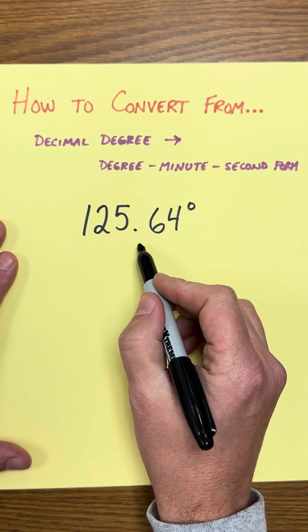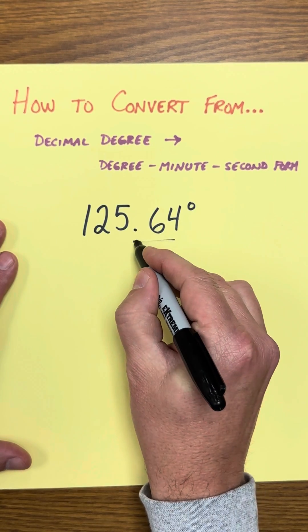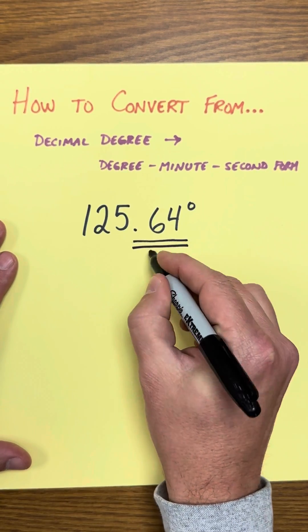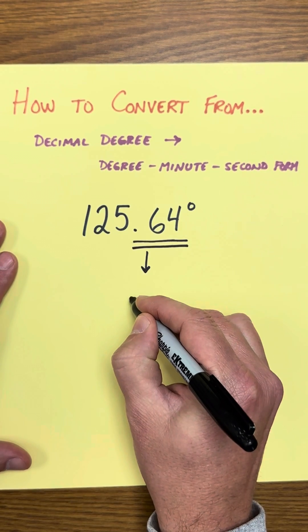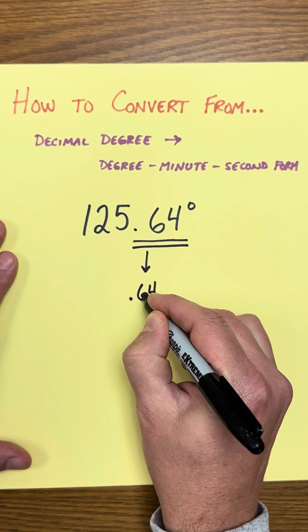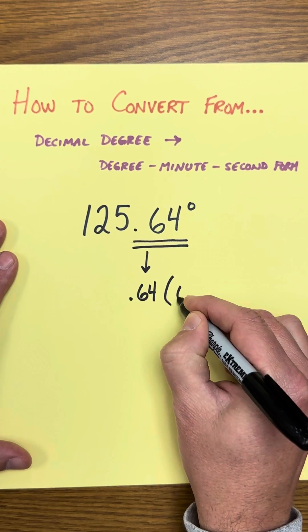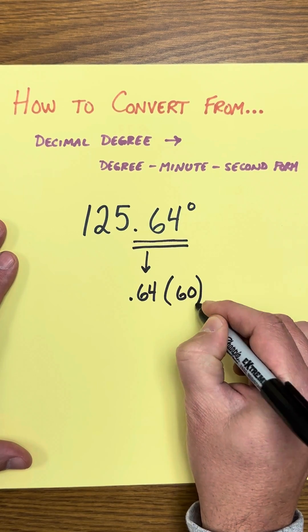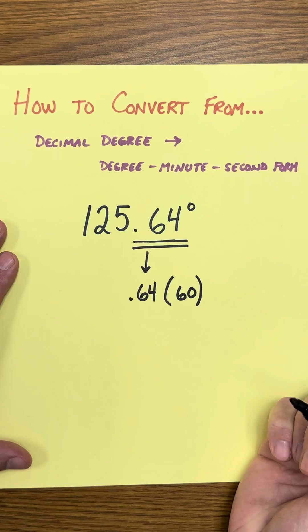We are going to simply begin this by working on the decimal part of this angle, the 0.64. What we're going to do is take 0.64 and multiply it times 60 because there are 60 minutes in one degree.